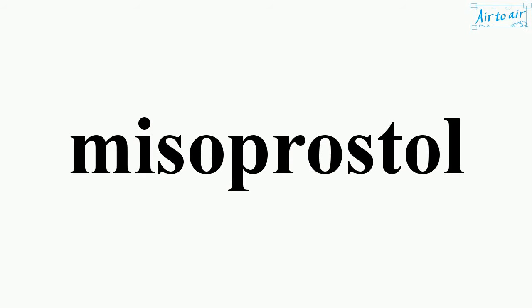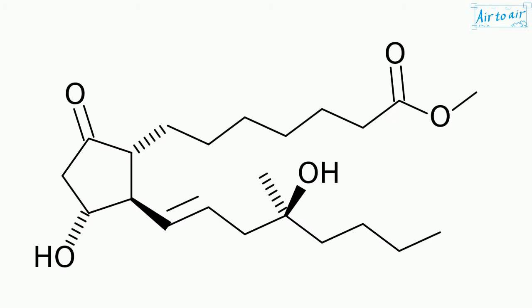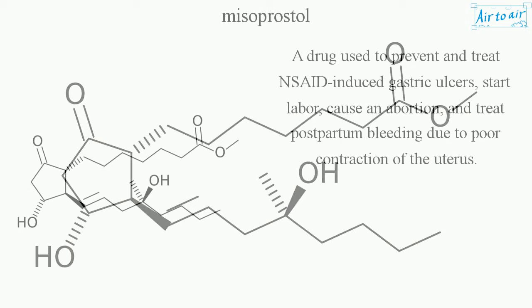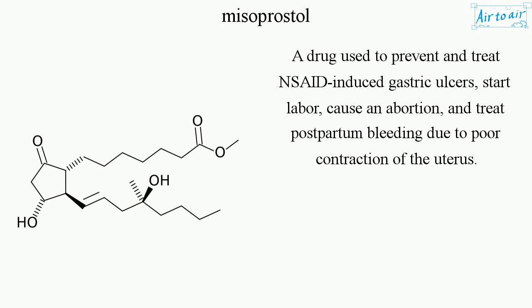Misoprostol. A drug used to prevent and treat NSAID-induced gastric ulcers, start labor, cause an abortion, and treat postpartum bleeding due to poor contraction of the uterus.